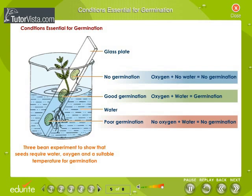Conditions essential for germination. Seeds germinate only if all three factors — water, oxygen, and suitable temperature — are available. In the absence of any one of these factors, germination does not occur.